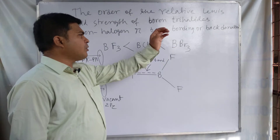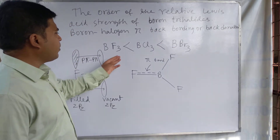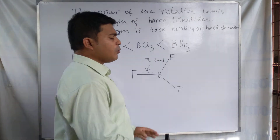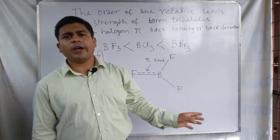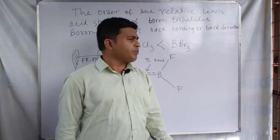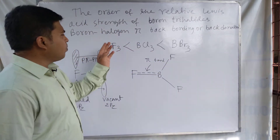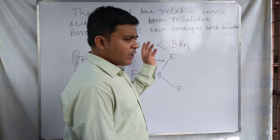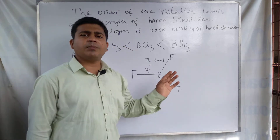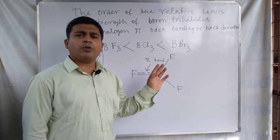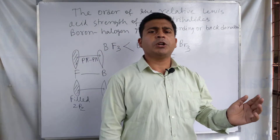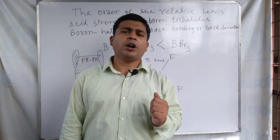Boron trihalides — BF3, BCl3, and BBr3 — are electron deficient compounds. The boron atom in these trihalides cannot complete its octet, so the octet rule exception occurs. Boron does not have 8 electrons in the valence shell, and according to Lewis acid-base theory, an acid is a substance that can accept a pair of electrons.